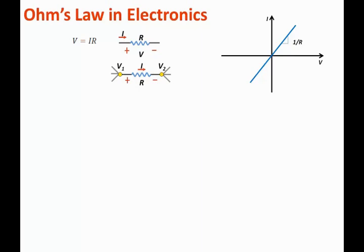Using Ohm's law, we can define the voltage across the resistor as V1 minus V2, which equals I times R. This is Ohm's law.